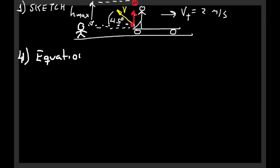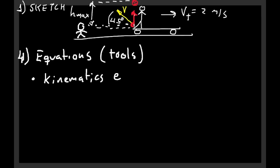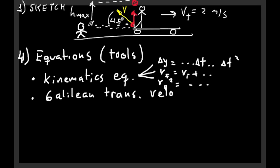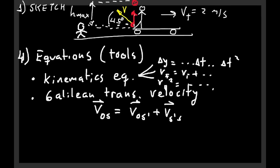The fourth step in solving any physics problem is to identify the equations or tools at your disposal. Since this is a kinematics problem, you have three kinematic equations for the x-direction and three for the y-direction. Since it is also a relative motion problem, you should apply the Galilean transformation of velocity equation.